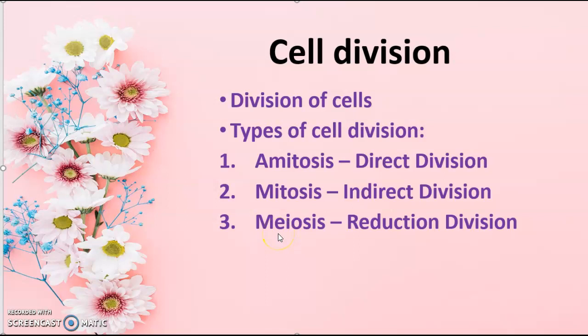Coming to meiosis, here the parent cell is divided into four daughter cells, and this process is called reduction division. Generally, all the daughter cells produced from amitosis and mitosis have the same set of chromosomes as their parent cell. But in meiosis, the daughter cells have only a haploid set of chromosomes — they do not have the same set of chromosomes as the parent cell. So this process is known as reduction division.